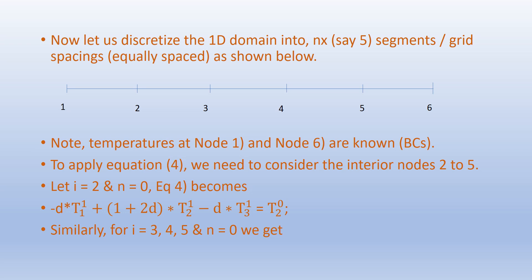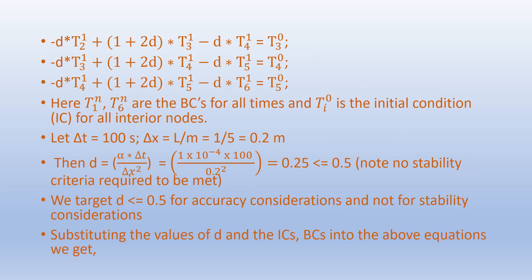Now let us discretize the 1D domain into five segments or grid spacings, equally spaced. Node temperatures at nodes 1 and 6 are known — these are the boundary conditions. To apply Equation 4 we consider interior nodes 2 to 5. For i=2, n=0, Equation 4 becomes: -D×T_1^1 + (1+2D)×T_2^1 - D×T_3^1 = T_2^0. Similarly for i=3, 4, 5 and n=0 we get corresponding equations. Here T_1^n and T_6^n are the boundary conditions for all times, and T_i^0 is the initial condition for all interior nodes.